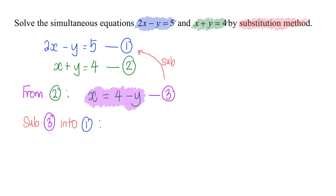So I will have my 2x, but the x we are going to substitute as 4 minus y, because x and 4 minus y they are equivalent to each other, they are equal to each other. So instead of writing x, I will write as 4 minus y.